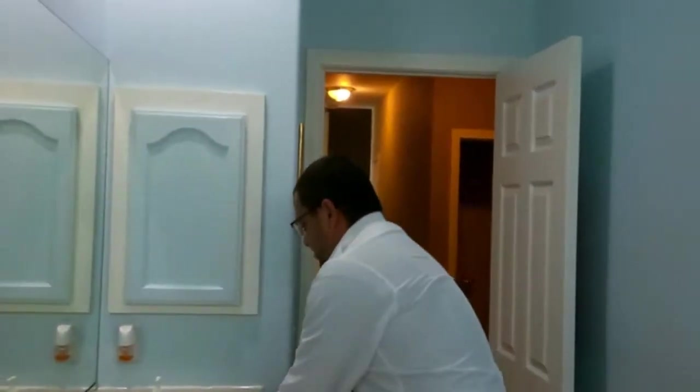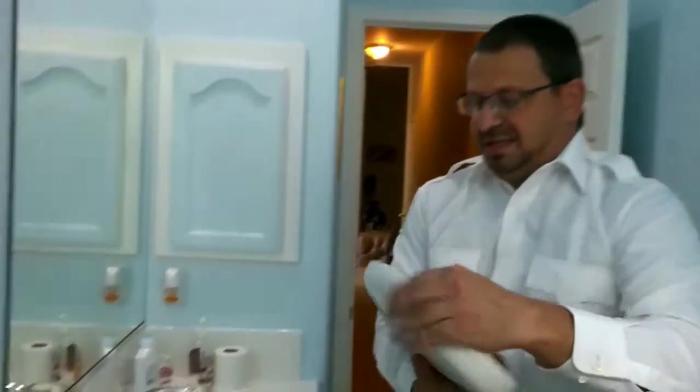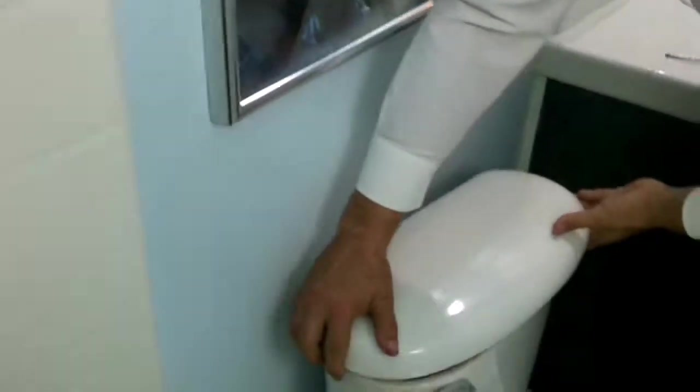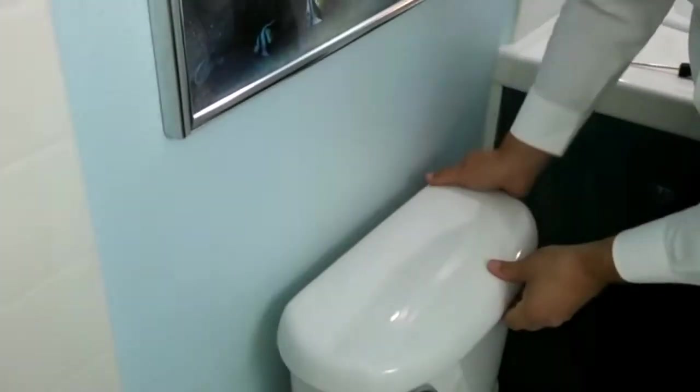And finally, we put the lid back on. And there you go, that's how you replace a float valve in the toilet.